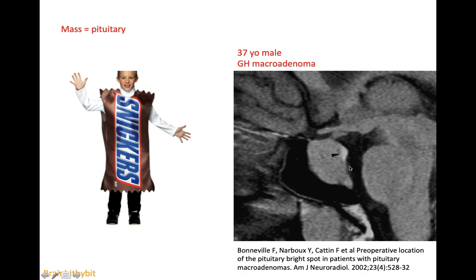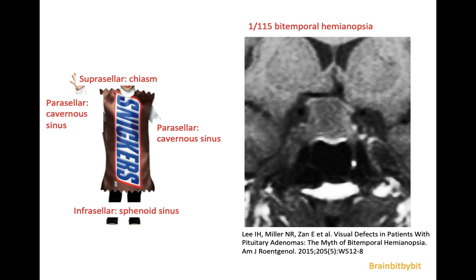The posterior pituitary bright spot is often displaced upwards, above the level of the diaphragm. The symptoms of macroadenoma are not only caused by hormonal disturbances, but also by the extension and compression on surrounding structures.